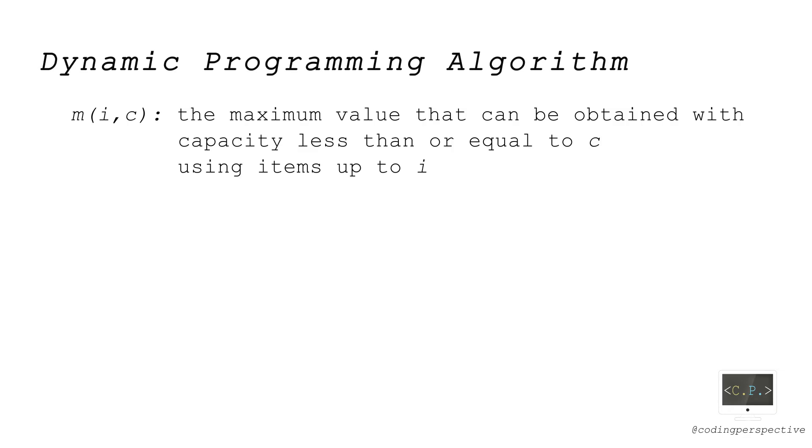First, we construct the value function m(i,c) for each item i and capacity c. m(i,c) represents the maximum value that can be obtained with capacity less than or equal to c using items up to i.